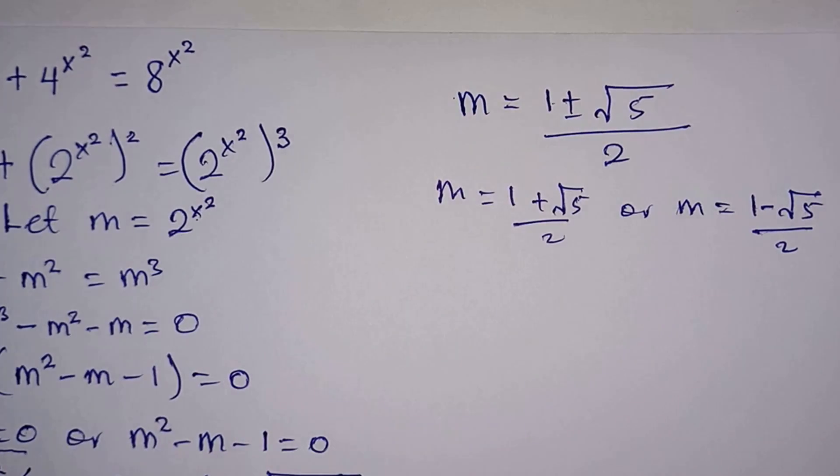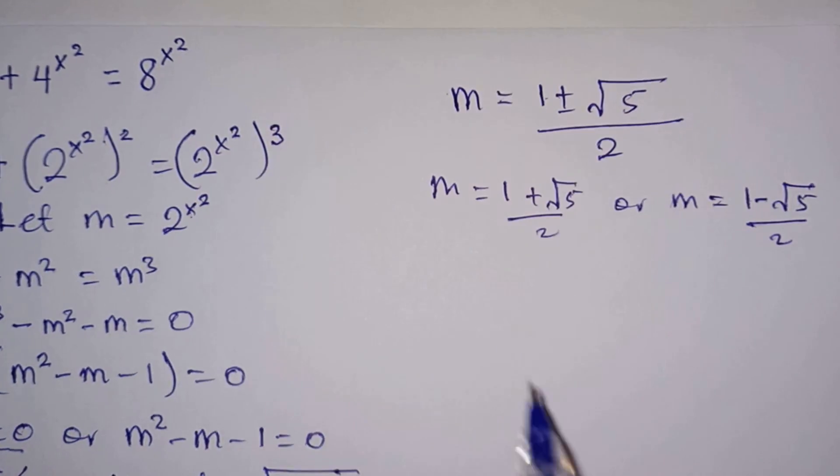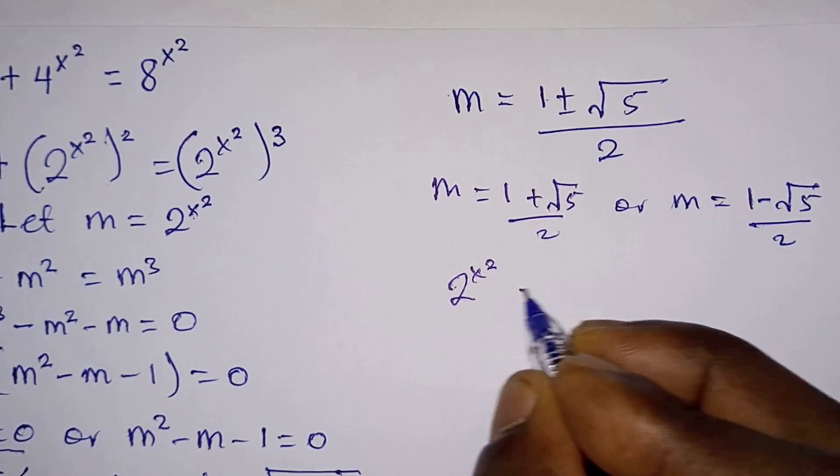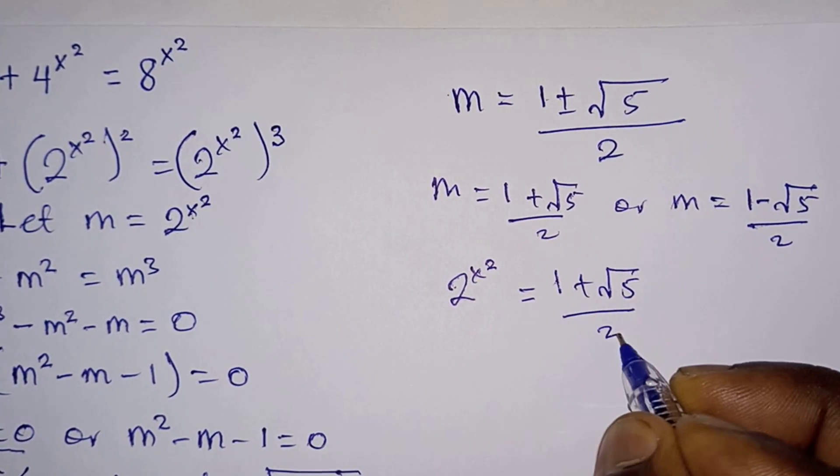But remember we let m equal to 2^(x²). So from here you have 2^(x²) = (1 + √5) / 2.